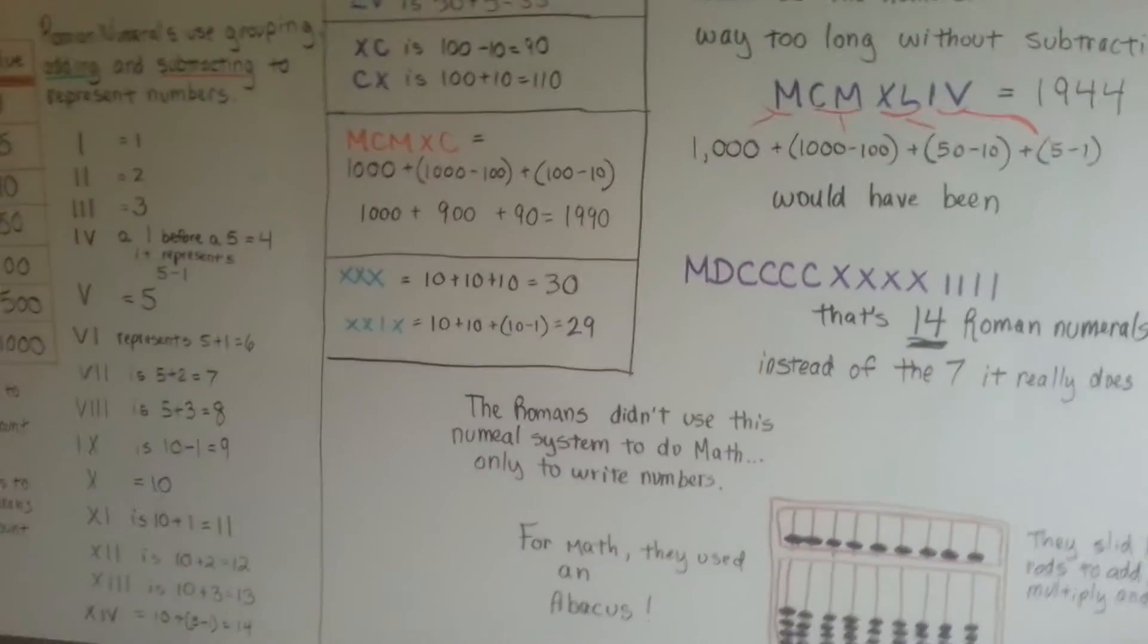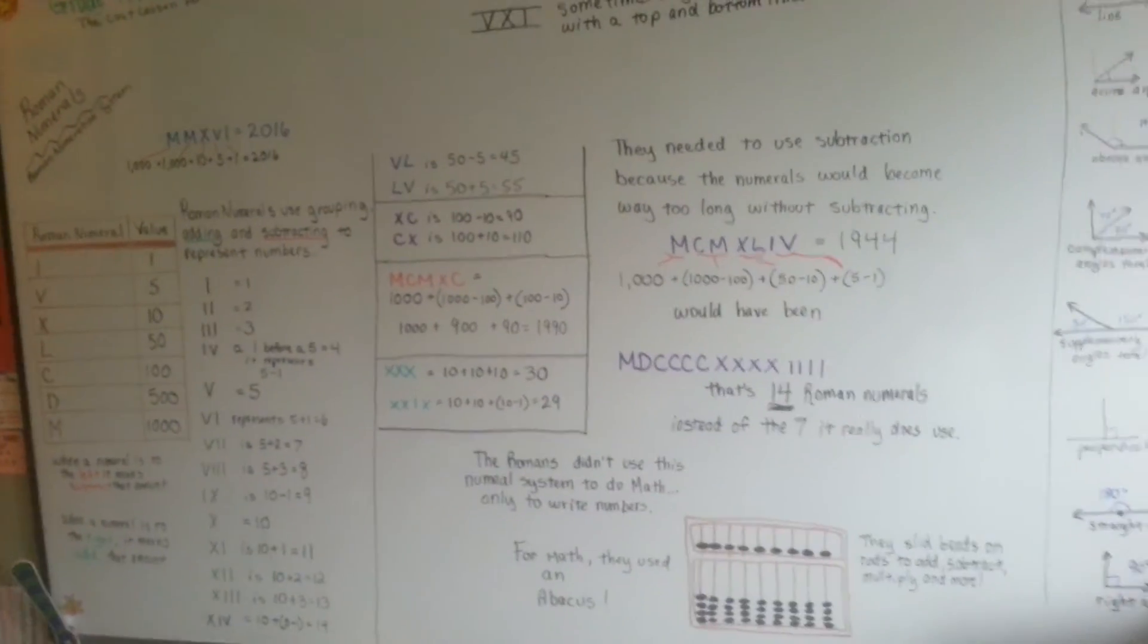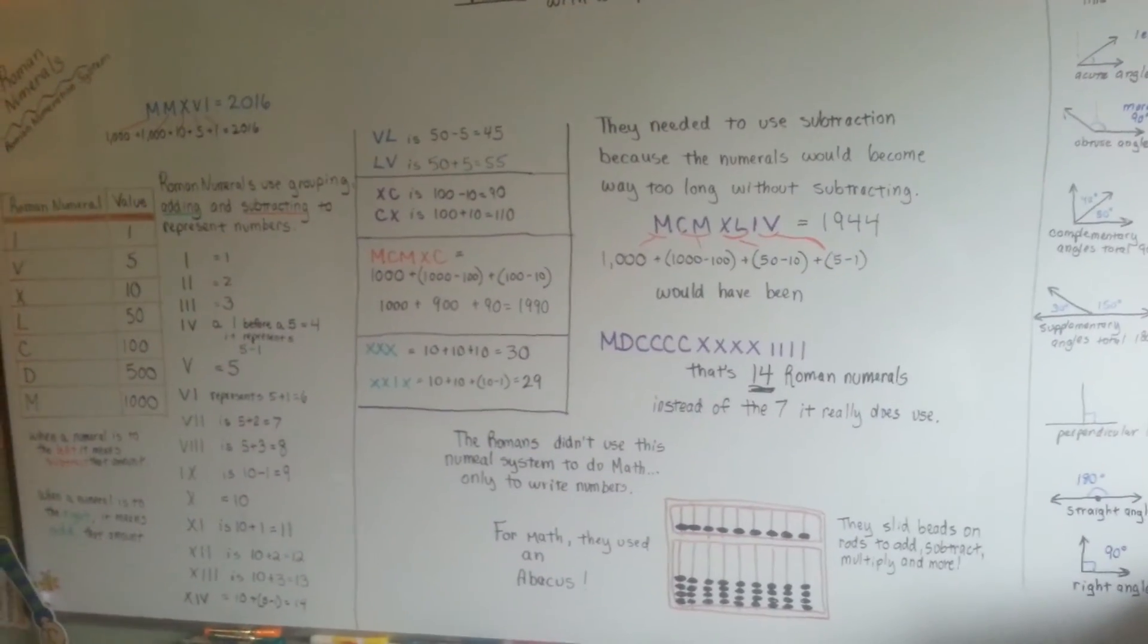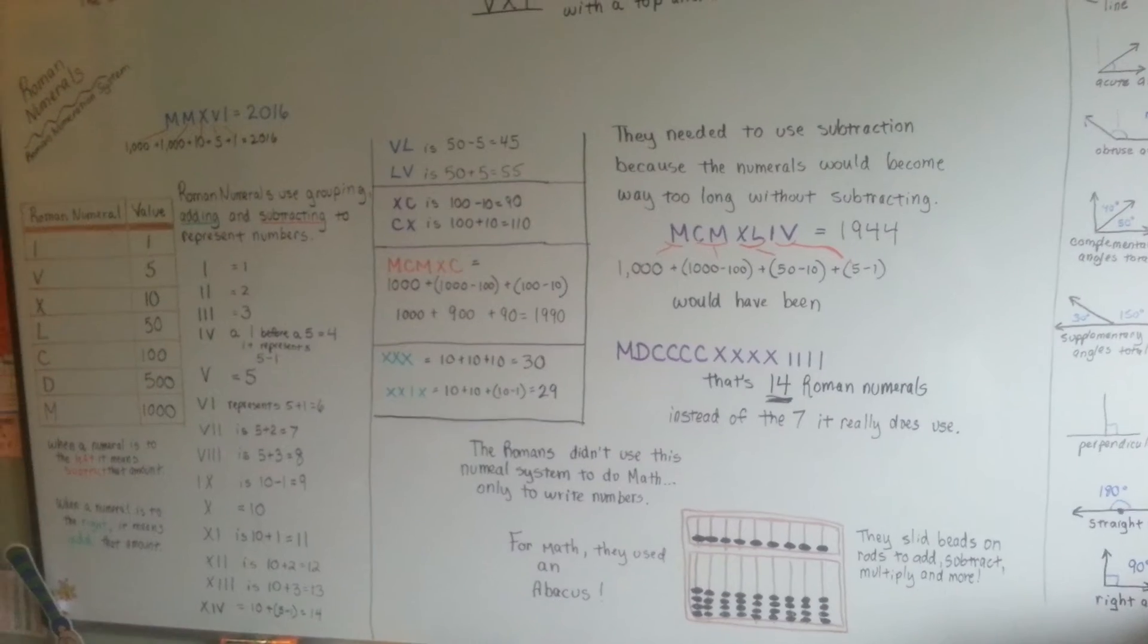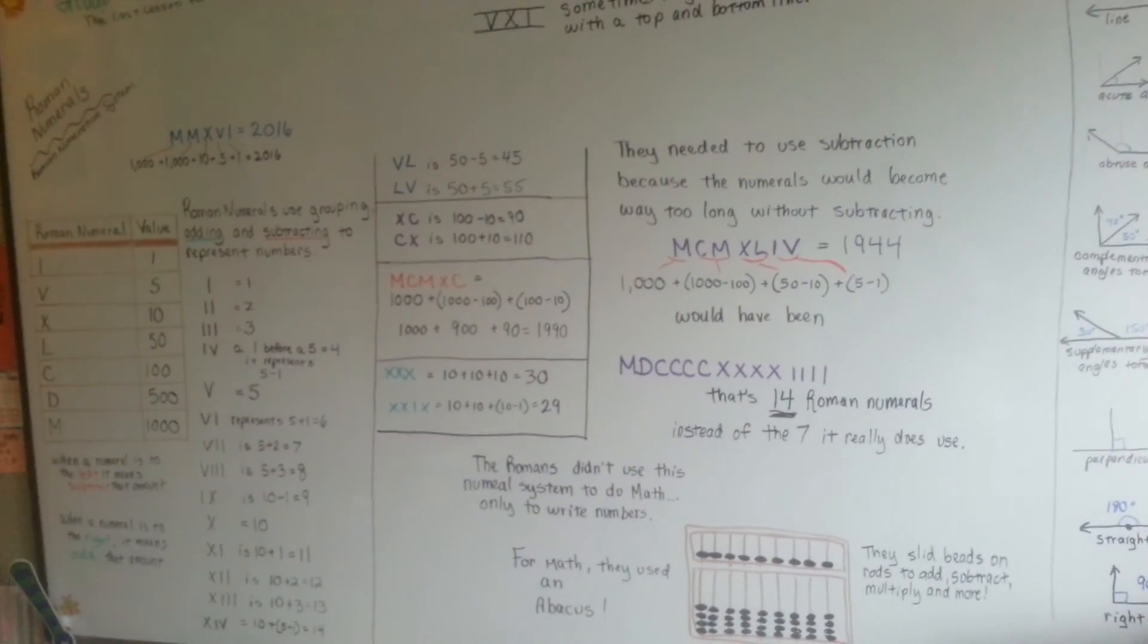So that's Roman numerals. That's the Roman numeral system. And just remember, to the left means take it away, and to the right means add it on. And now you can write your age and your address and all kinds of stuff in Roman numerals.